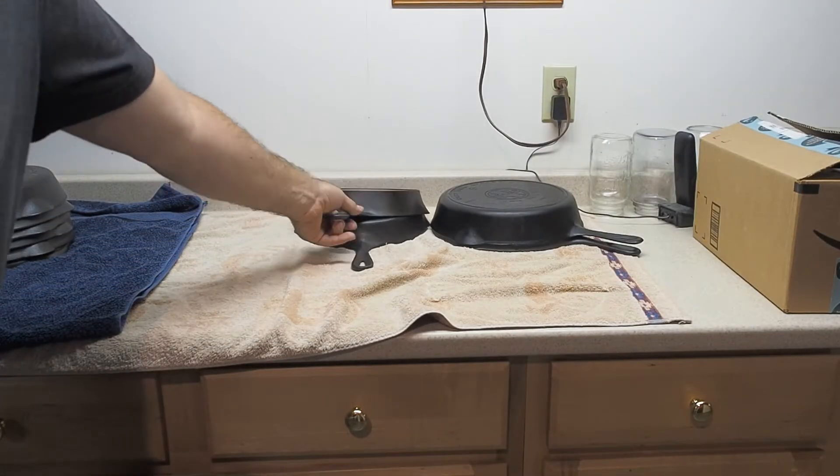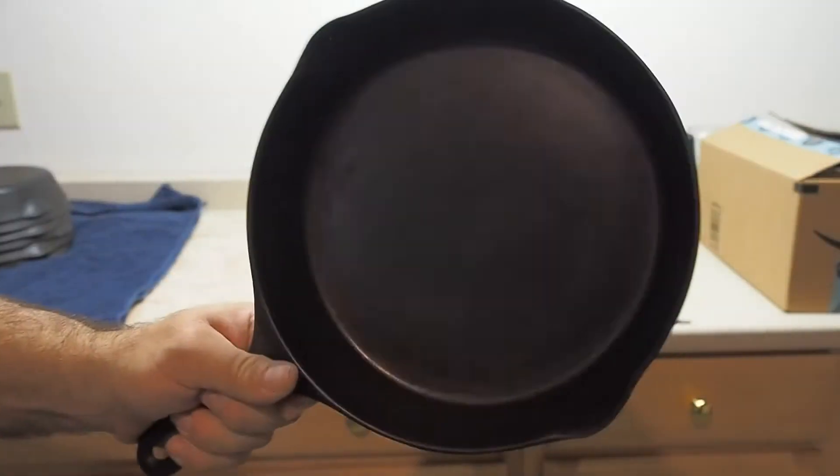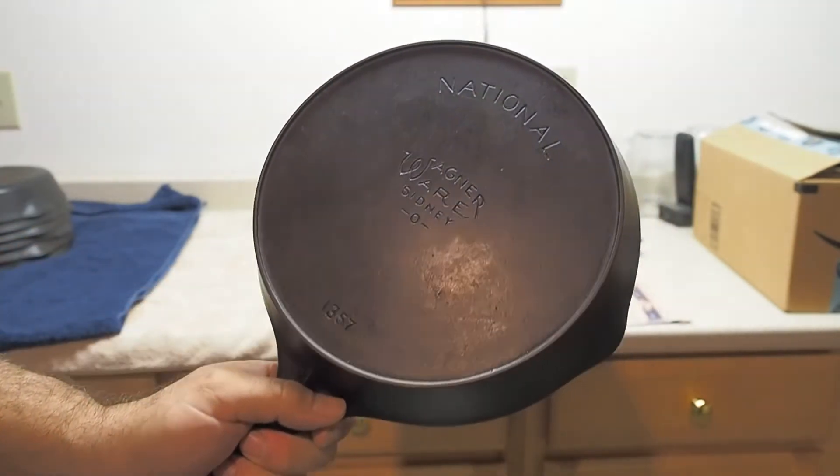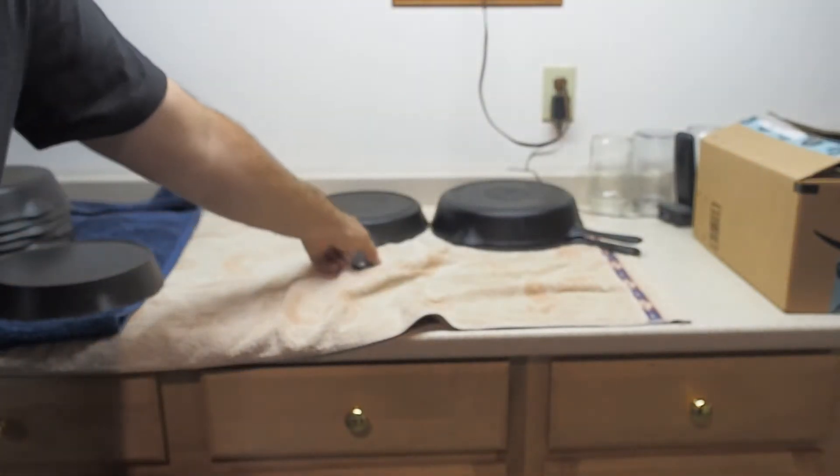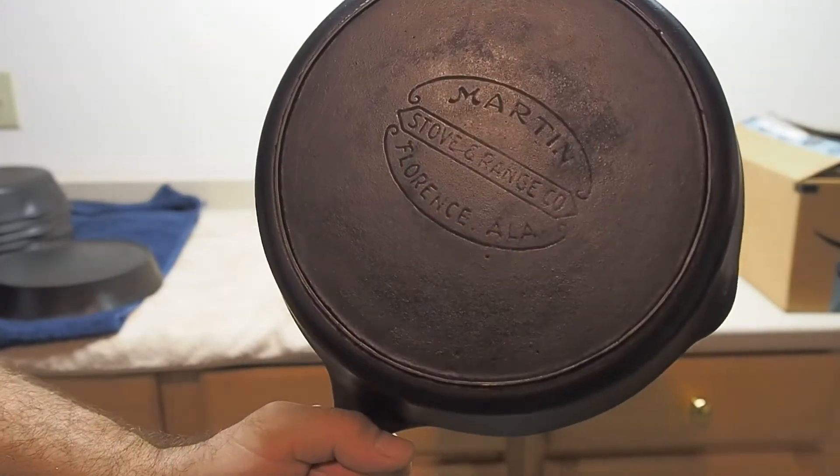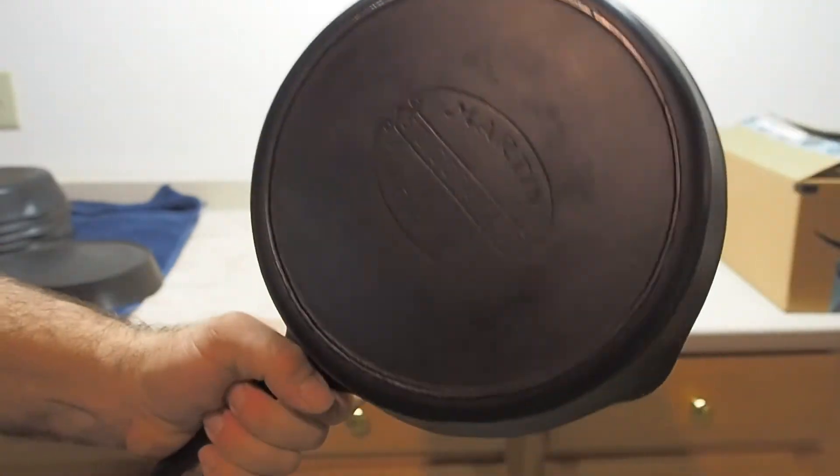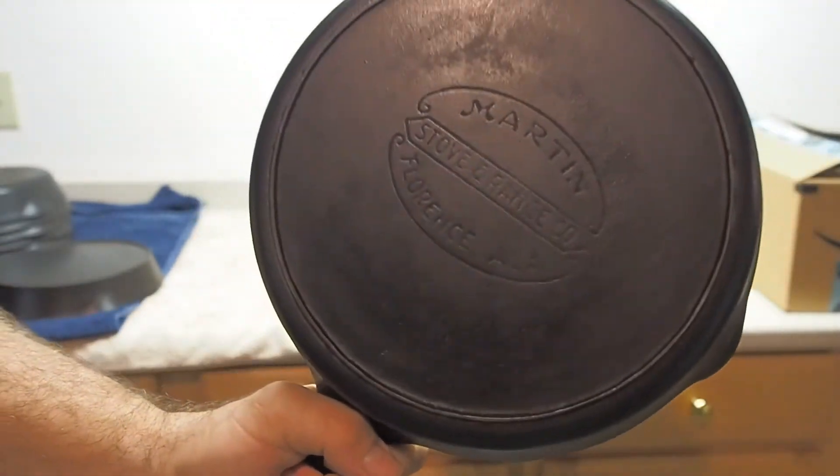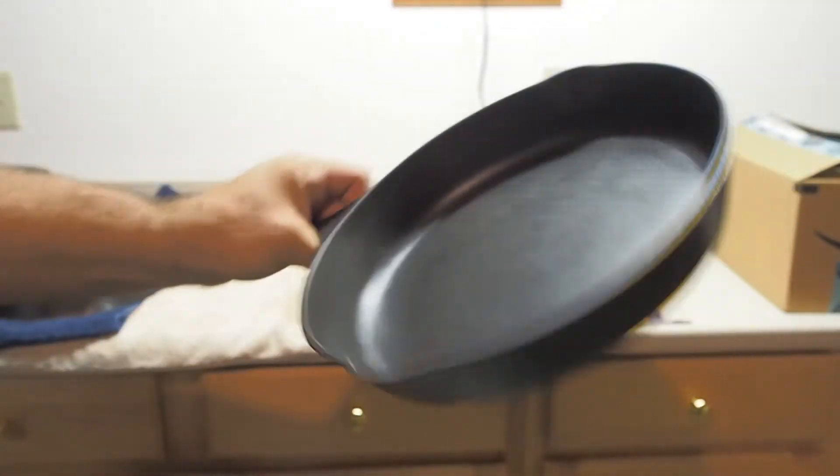Now we've got some number sevens. There's a Wagner National, and it is Featherlite. Nice old pan. And the opposite of that is this heavy Martin Stove Man range, number seven. These are great for searing steaks in, because they are so heavy. You can get them good and hot. Very nice.